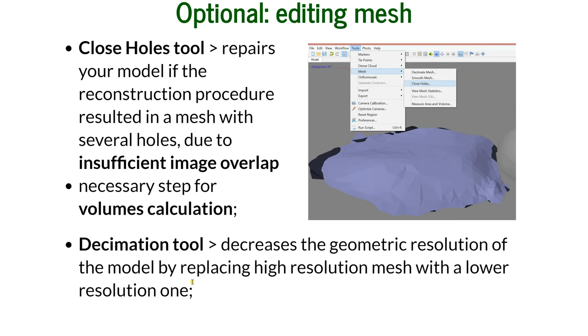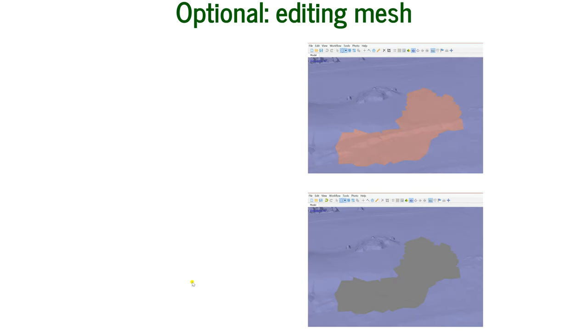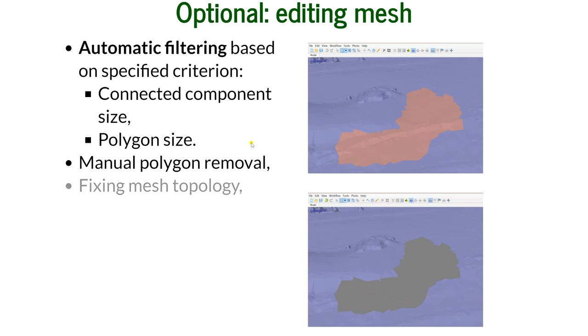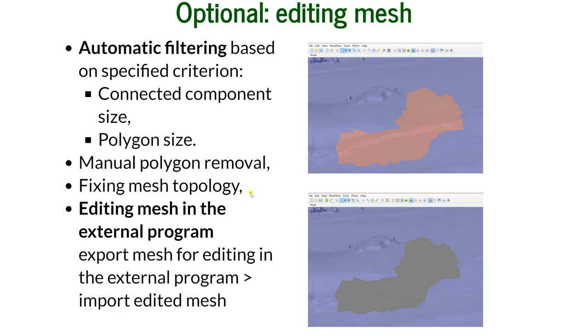Optionally, you can also edit mesh manually. I selected here faces and removed them. You can also use automatic filtering based on specific criteria: the connected component size and the polygon size. As I mentioned, there's an example of manual polygon removal. You can also fix the mesh topology.